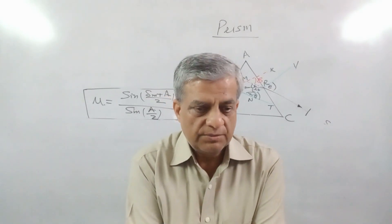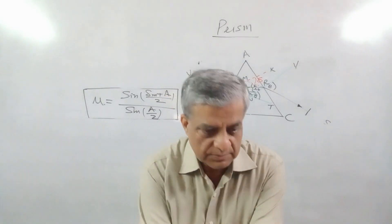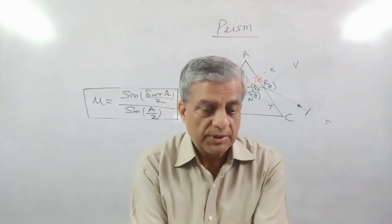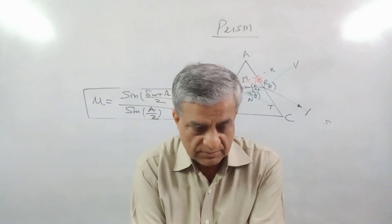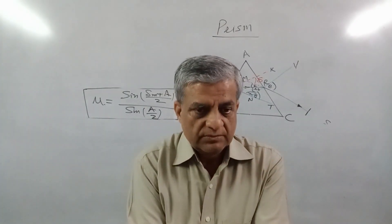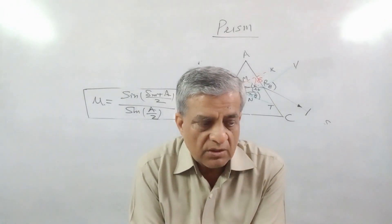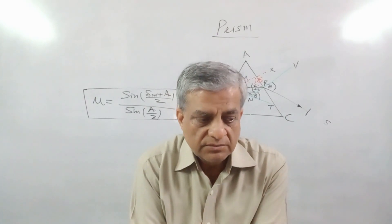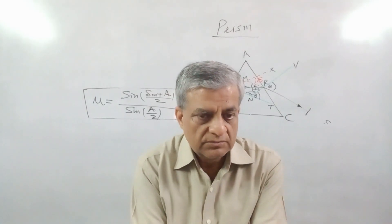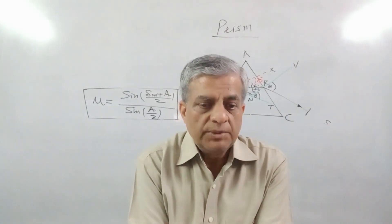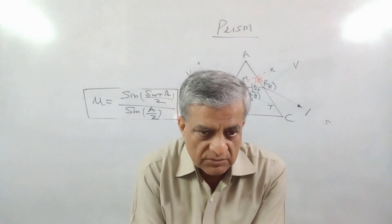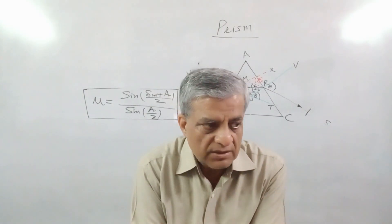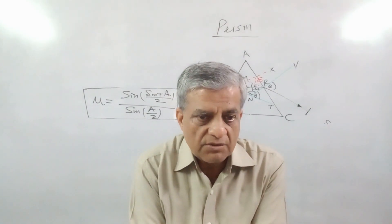In a certain equilateral prism, the angle of minimum deviation is found to be 30 degrees. Find the refractive index of the medium.